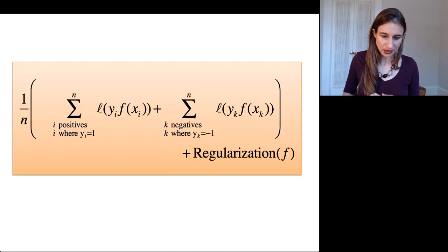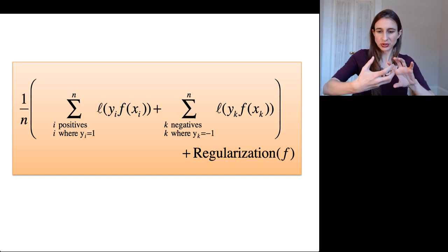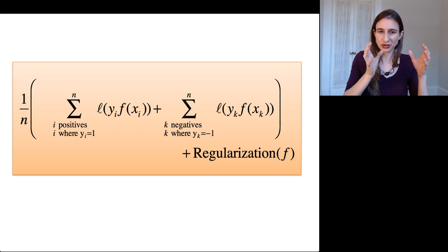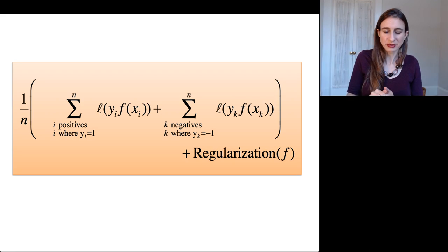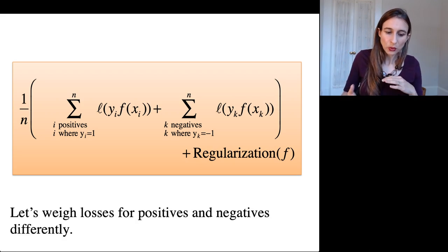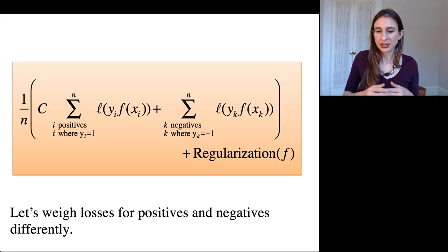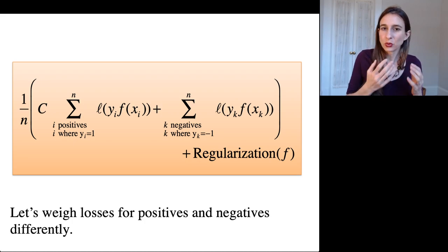And so in order to fix that, what we're going to do is split the loss term. We're going to separate out the positives and the negatives so that we have the sum of losses for the positives on one side and the sum of losses for the negatives on the other side. And then what we'll do is weigh the losses for the positives and negatives differently by putting an imbalance parameter to multiply one of the two terms.